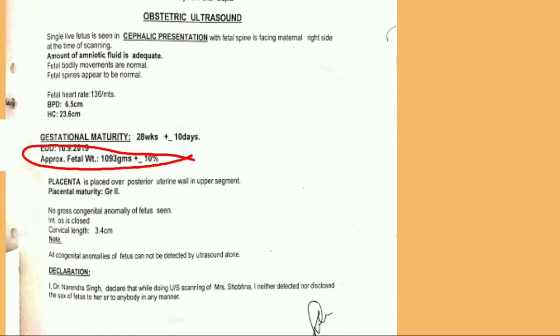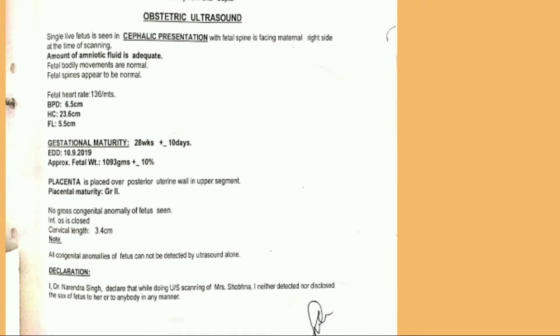Next is approximate fetal weight, which is the weight of the baby given in grams, with a plus-minus approach. The size is also given in this section.